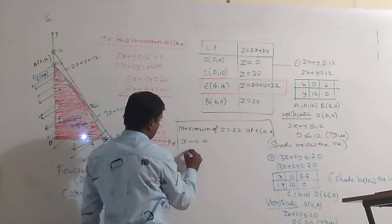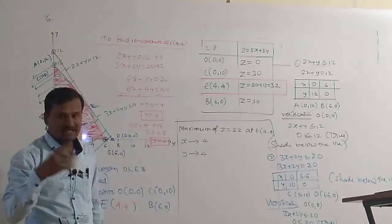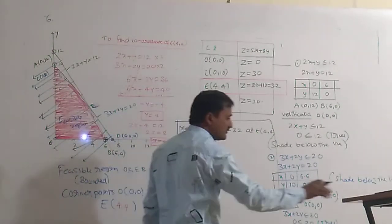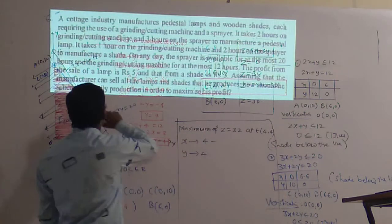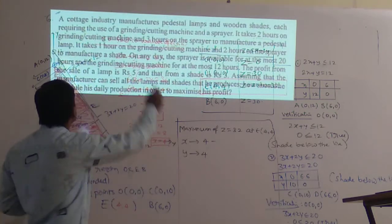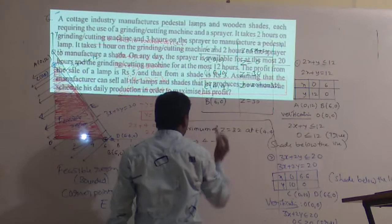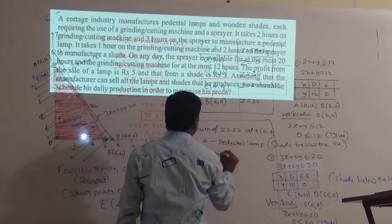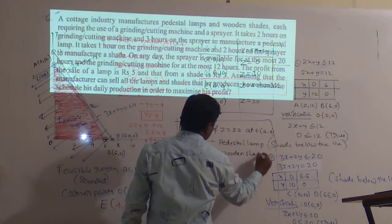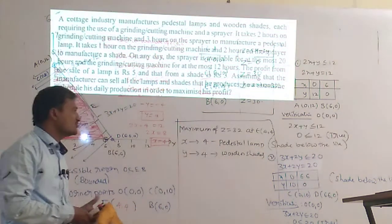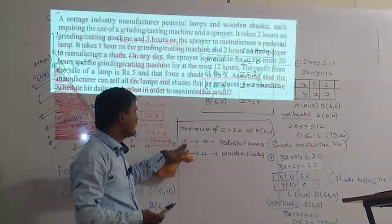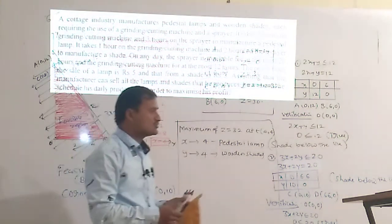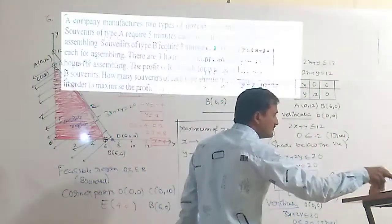To get the maximum profit of Z = 32 rupees, the company should manufacture 4 pedestal lamps and 4 wooden shades. This is how we solve this type of problem.